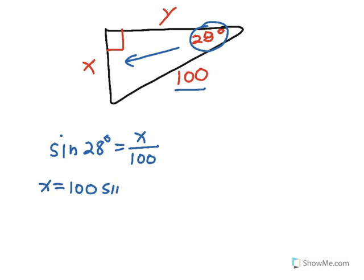On my calculator, I can enter it like this, and the calculator will give me a parenthesis to enter the 28 degrees in. So X is approximately, to the nearest whole number, 47 units long.